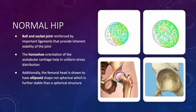The hip joint is assumed to be spherical but is actually slightly ellipsoid. The horseshoe orientation of the acetabular cartilage helps in uniform distribution of stress on the femoral head. The weight-bearing part is the horseshoe-shaped area, while the bare area is used for analyzing the depth of the true acetabulum when reaming for cup placement.